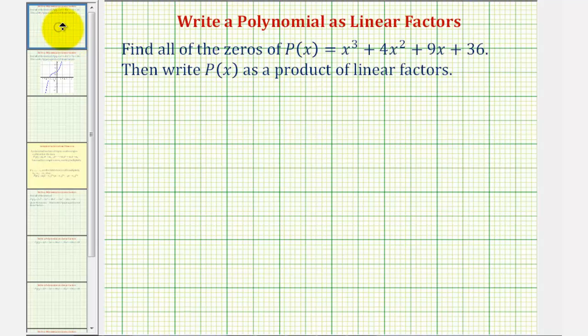So going back to our example, instead of using the rational roots theorem to find our real rational zeros of the function, we're actually going to graph the function and find the real rational zeros as x-intercepts of the function.